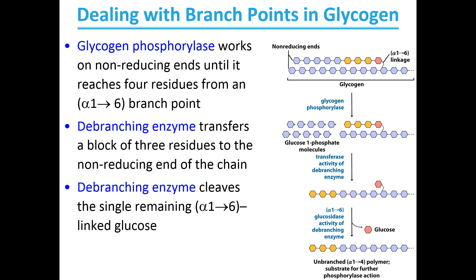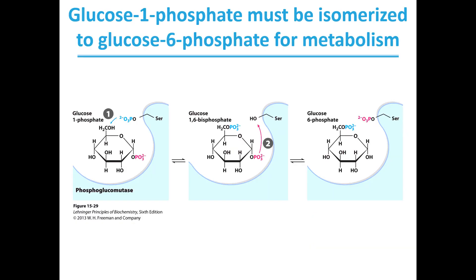At an alpha-1,6 branch point, the debranching enzyme is then going to transfer a block of residues of glucose, and then the debranching enzyme will cleave that alpha-1,6 linked glucose. Then the glycogen phosphorylase can continue its actions.